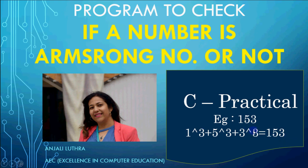So if the sum of digits each raised to the power of the number of digits is equal to the number itself, then the number is an Armstrong number. If it is not equal, the number is not an Armstrong number. If it is 2 digits, we take power 2. If it is 4 digits, we take power 4. That is how we check.